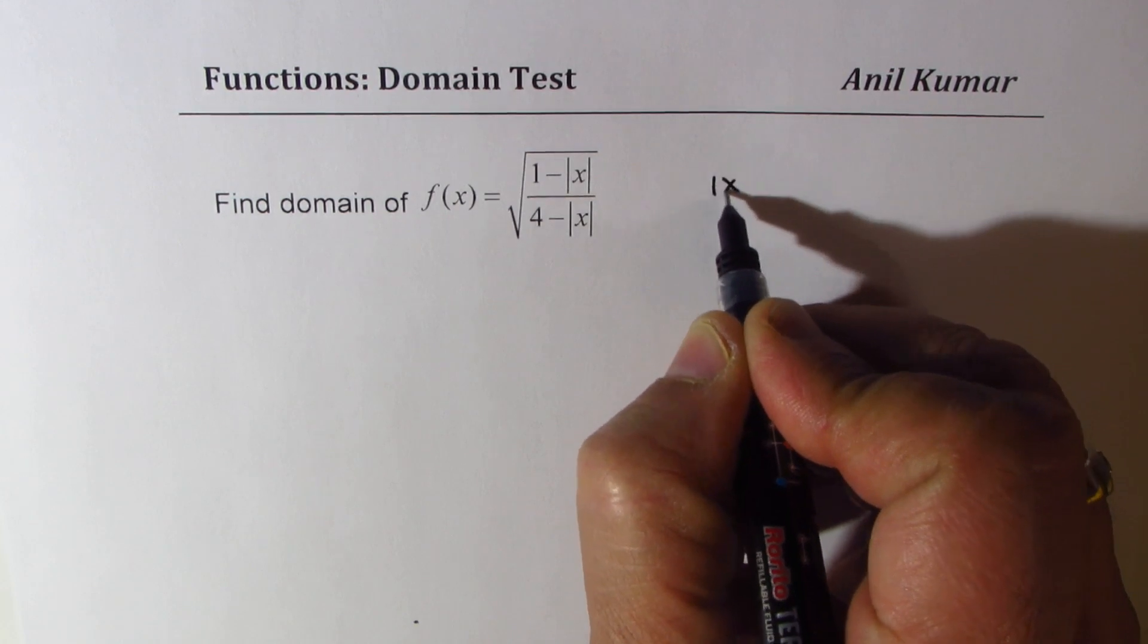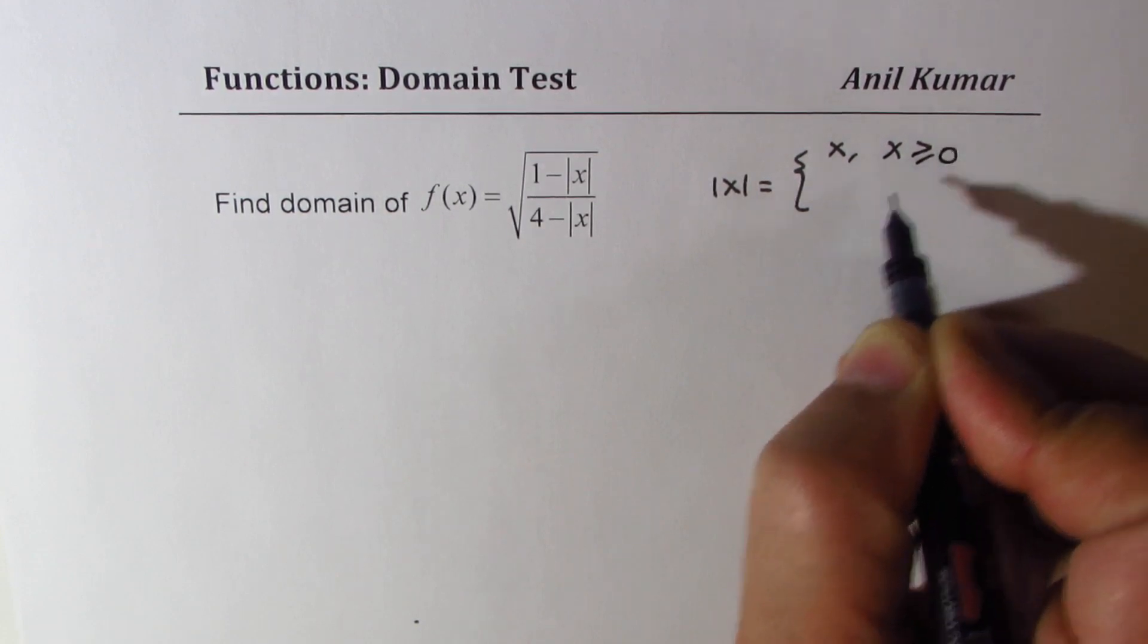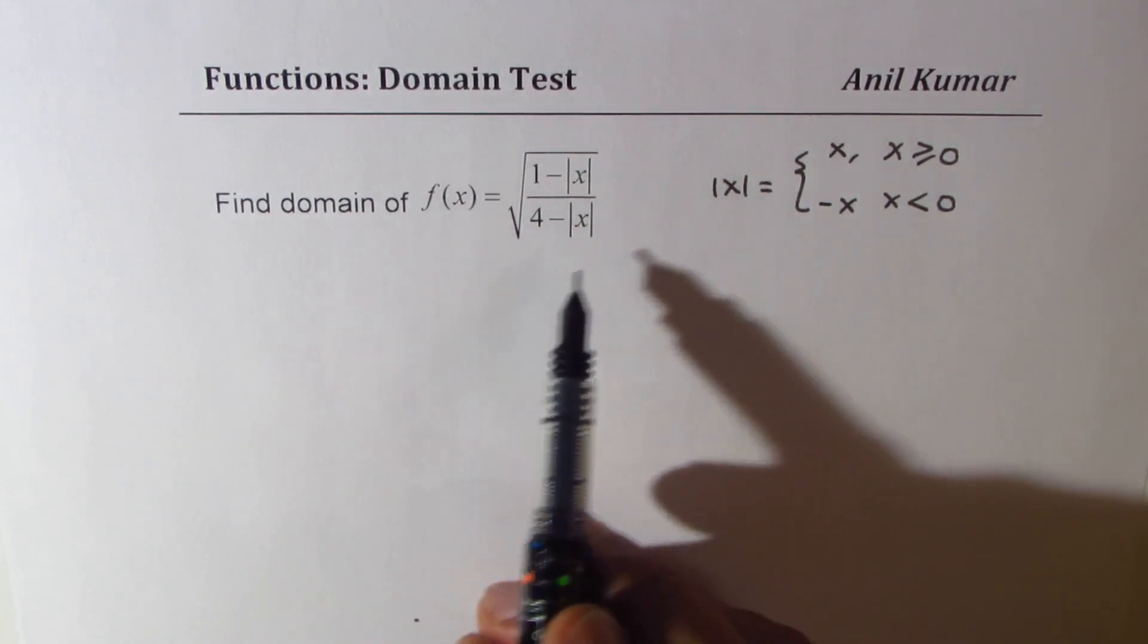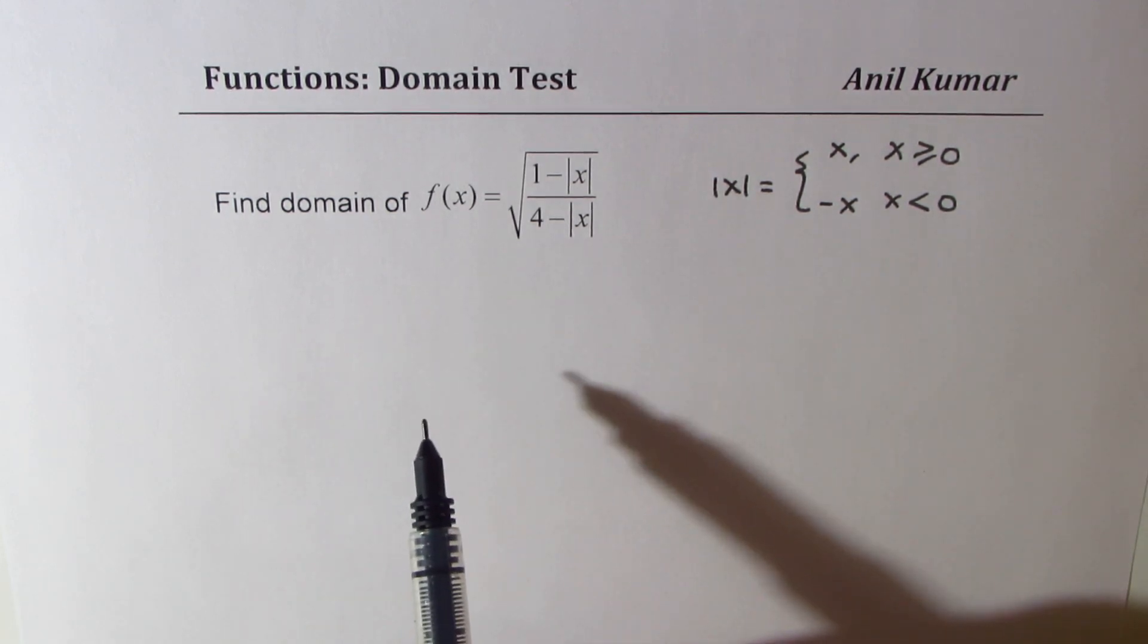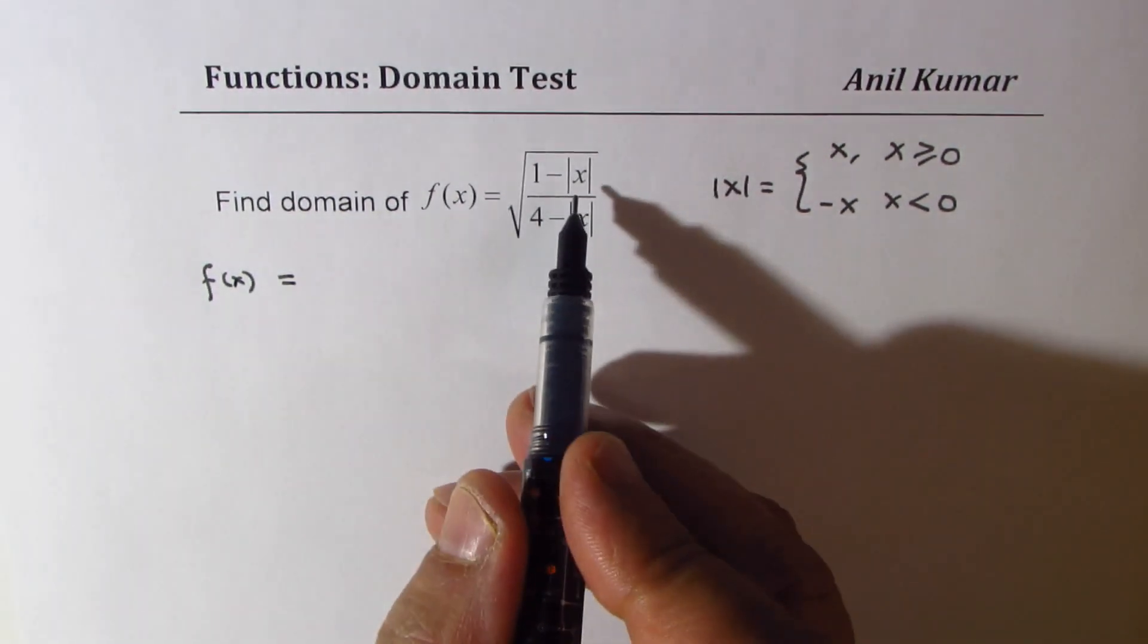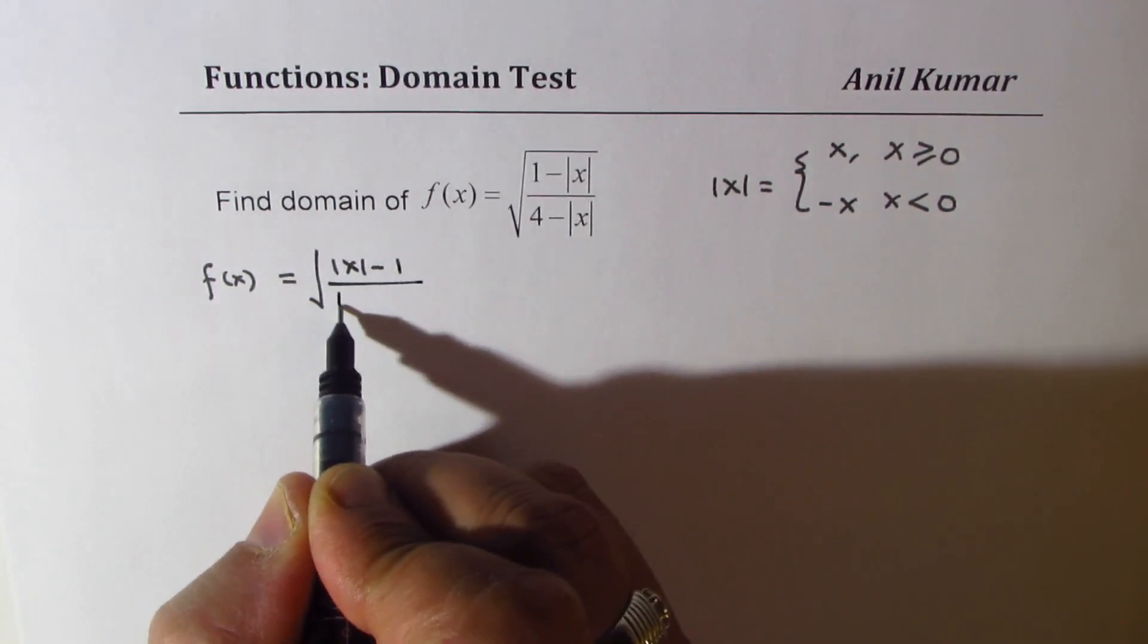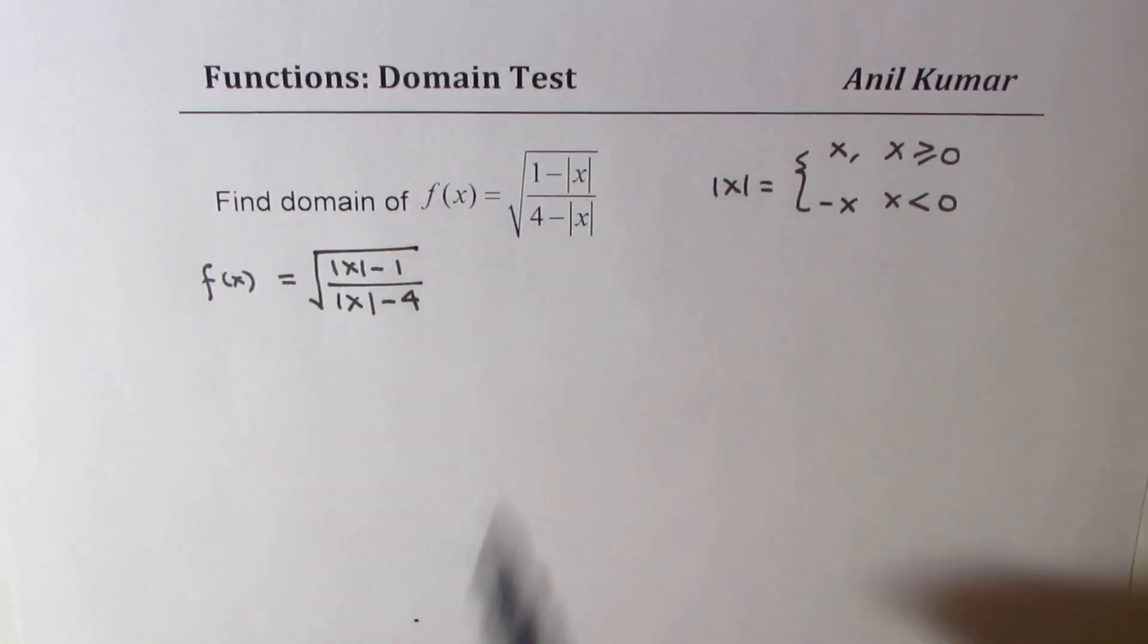Let's first define what is absolute x. Absolute x is equal to x when x is greater than equal to 0 and it's negative x when x is less than 0. That clearly indicates that we have to solve this within two different domains. Now I could also write this function f(x) as equal to absolute x minus 1 over absolute x minus 4. It is same as what is given.